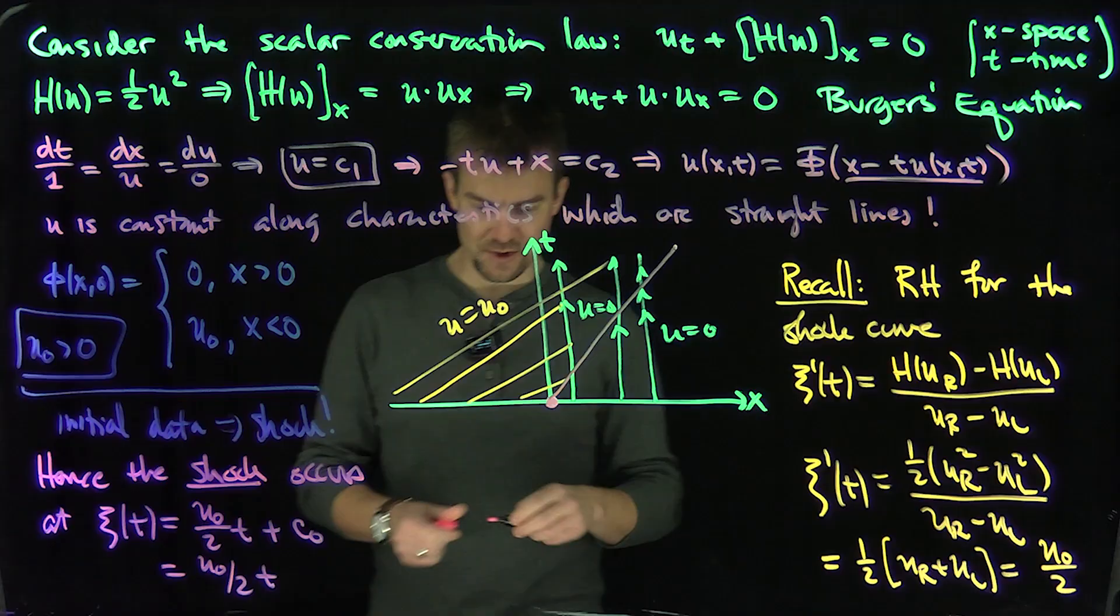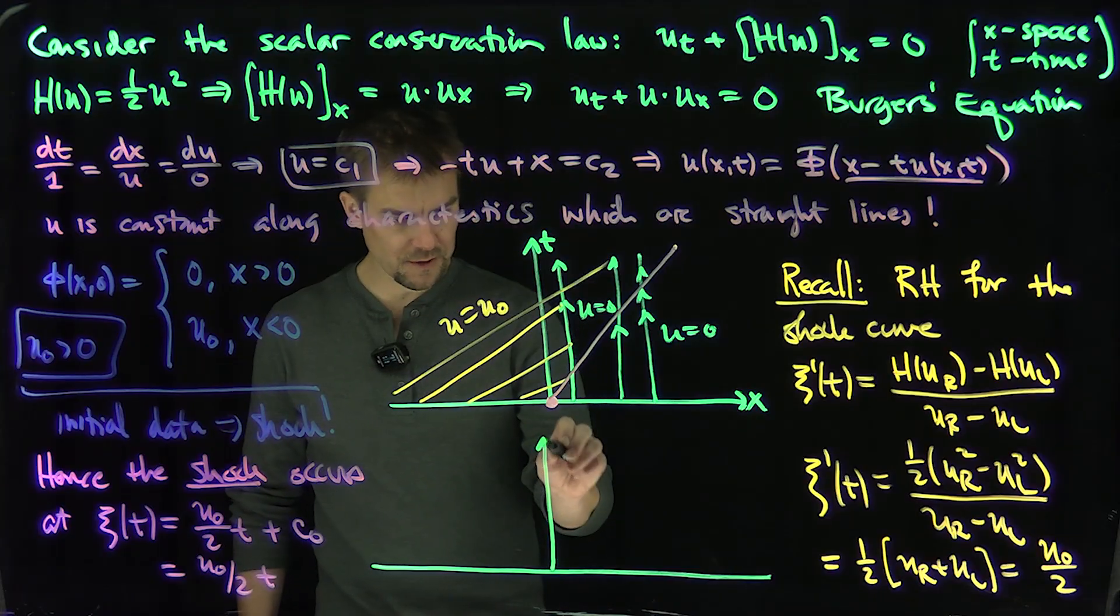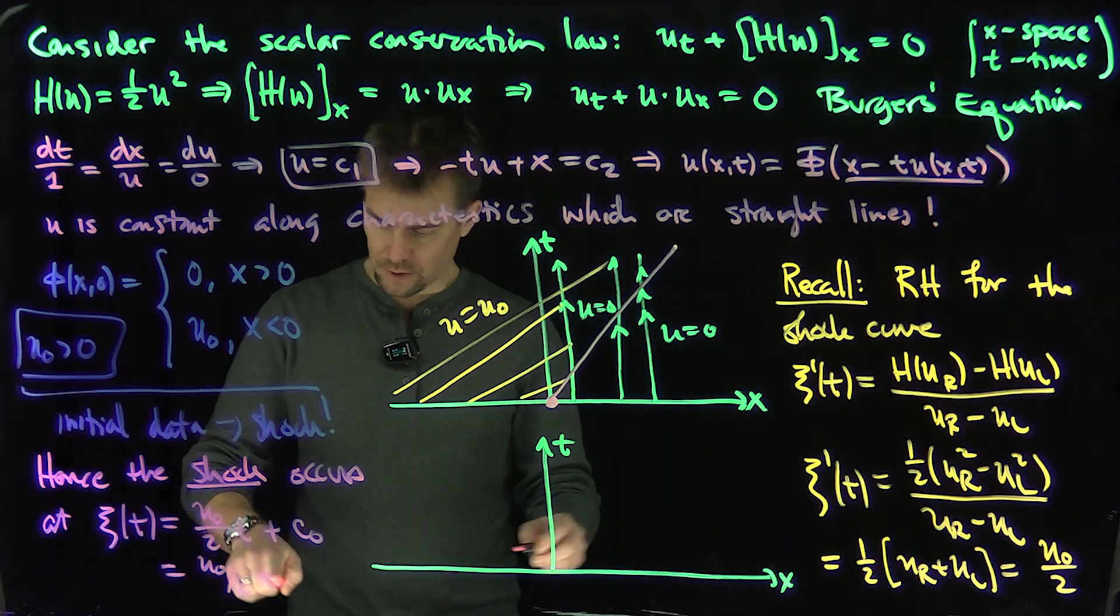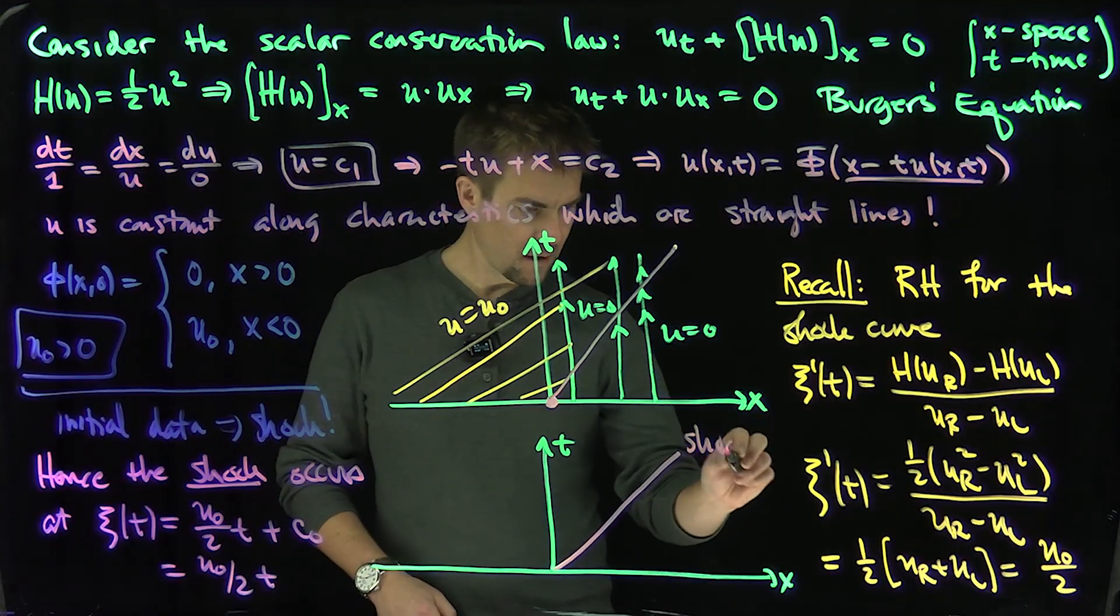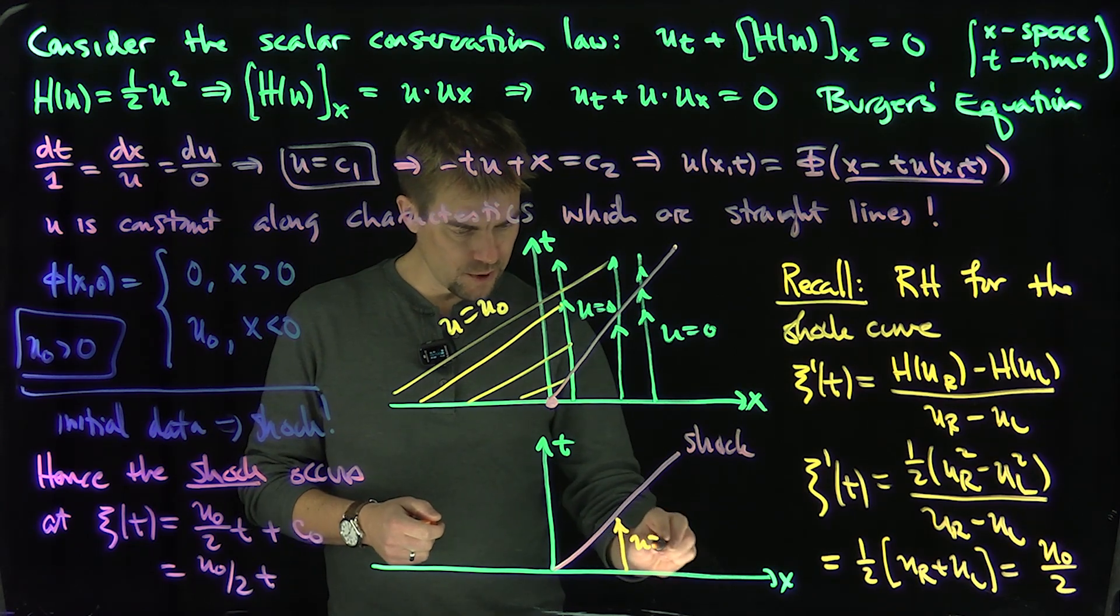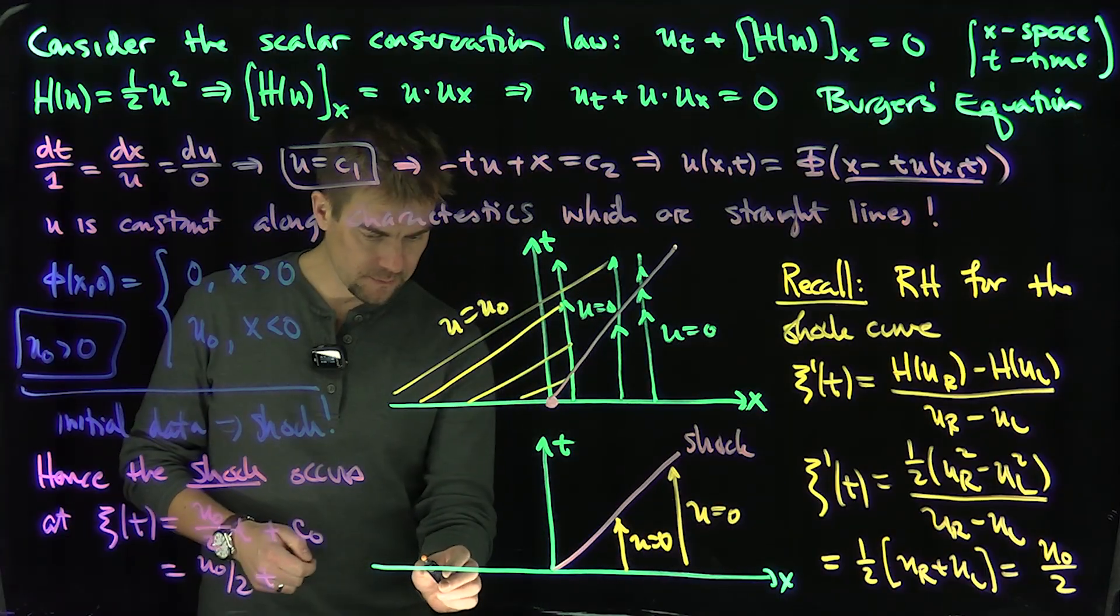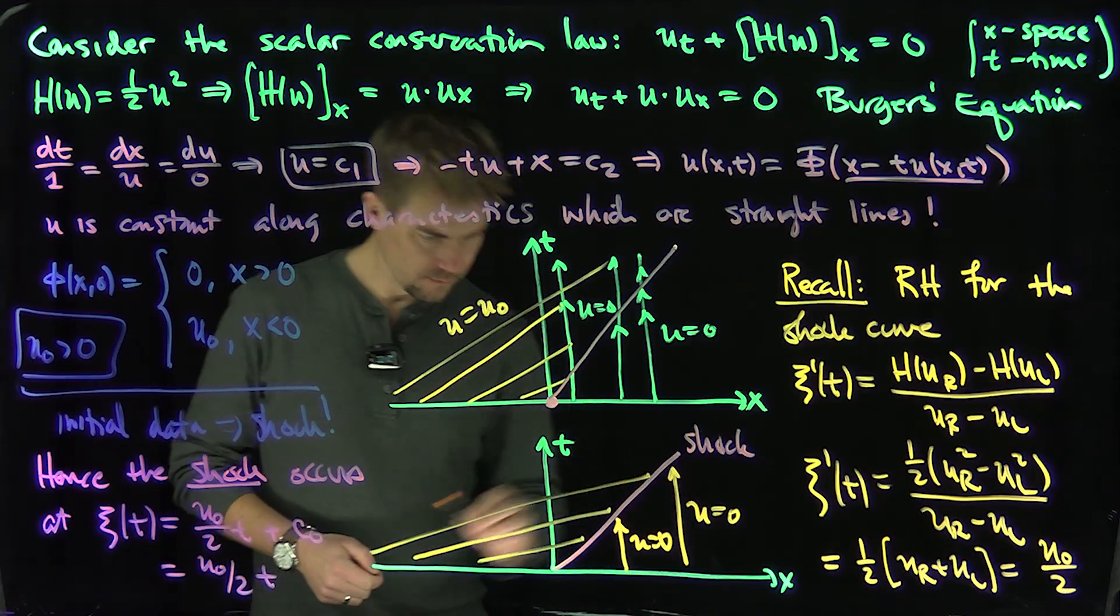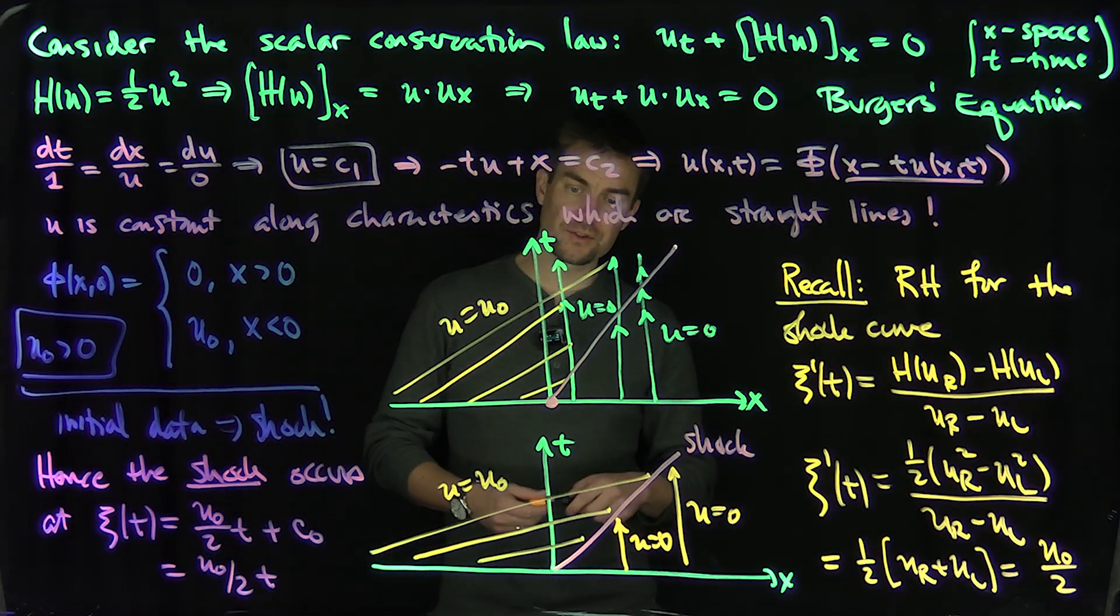So this line, u_0 over 2 t, is where the shock comes into play. So what's going to happen is your solution looks like this now. So we can redraw it in a much nicer form. Here's the t-axis, here's the x-axis. Here's my shock curve, my shock curve is u_0 over 2 t. That's just a linear curve that goes up like this. There's our shock. And up to this shock, the value of u is u equals 0 over here. And then over here are the values u equals the positive value u_0.